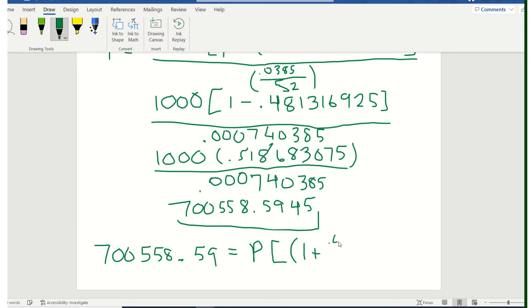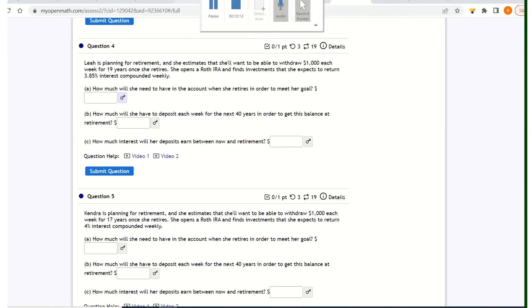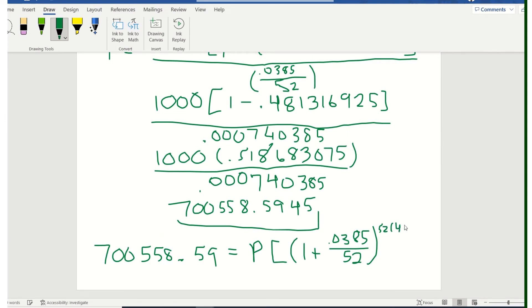So we're going to put $700,558.59 on the left side. We don't know the P, but we know everything else. Her interest rate is 0.0385. We know that she's going to compound weekly. So our R was 0.0385, N was 52 raised to the 52 times 40 years. So how long is she saving? 40 years, not 19. Longer saving period. Minus the 1, all over 0.0385 over 52.